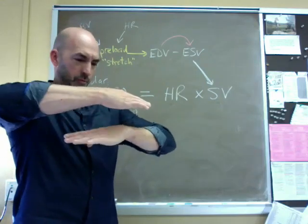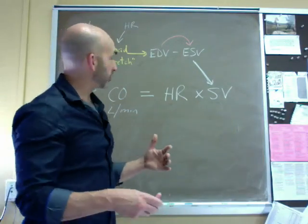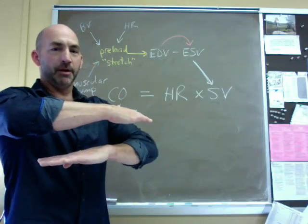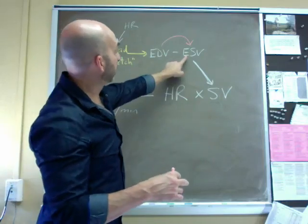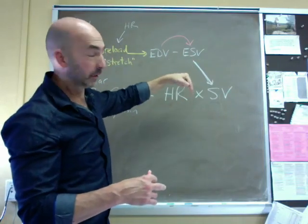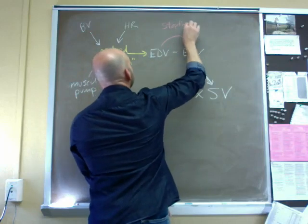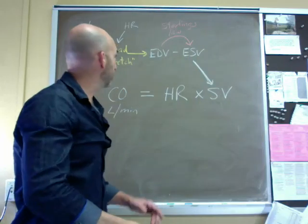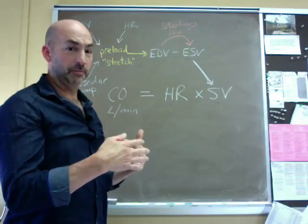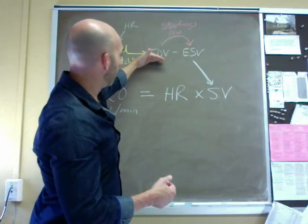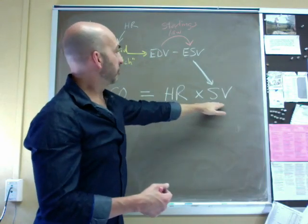The range of overlap determines how many cross bridges you can get. And so the short story here is that the more stretch optimizes the amount of overlap. The more optimal overlap, the more cross bridges, the more cross bridges, the harder it contracts, the harder it contracts, the less blood there is left behind, ESV goes down, which makes stroke volume go up. And that was Starling's law.